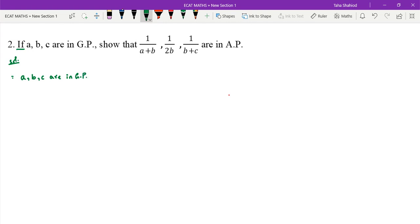If there are 3 numbers in GP, then B is the number which is always GM. Therefore, B is the GM between A and C.